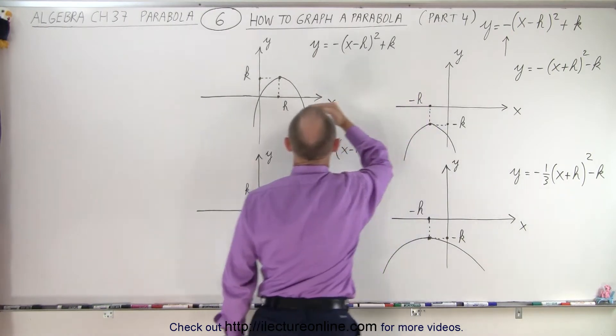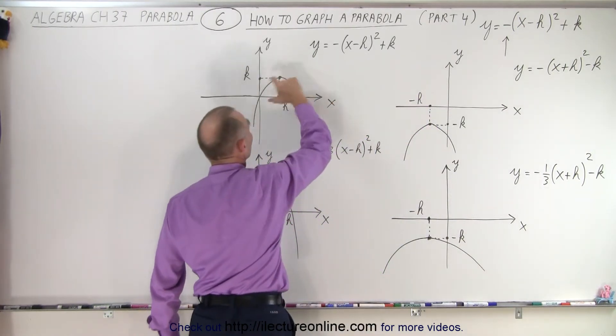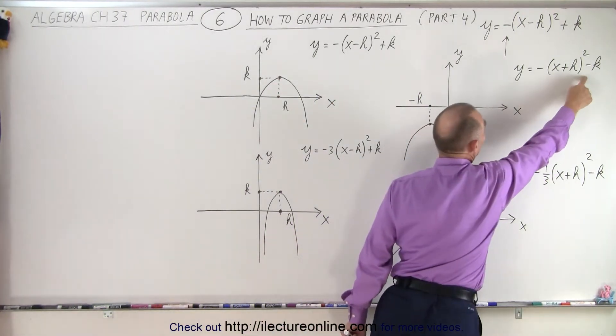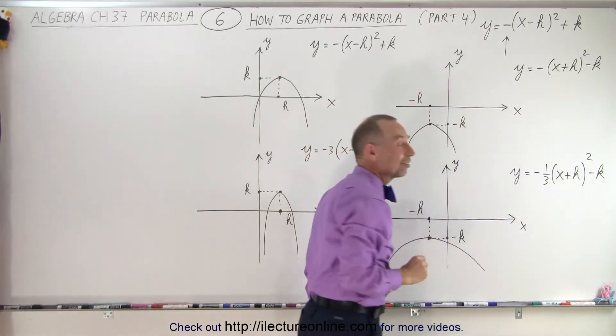Here we have a plus K, which means the parabola moves upward a distance K. And here we have minus K, which means the parabola moves downward a distance K.